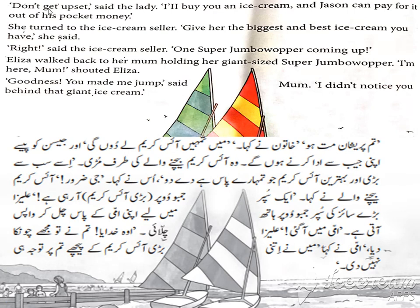Don't be upset — mat ho parishan — said the lady. Lady ne kaha: I will buy — mein khari dungi — you an ice cream — tumhare liye ice cream. And Jason can pay for it — or Jason ko ada karne honge iske paise — out of his pocket money — apni jayb se.